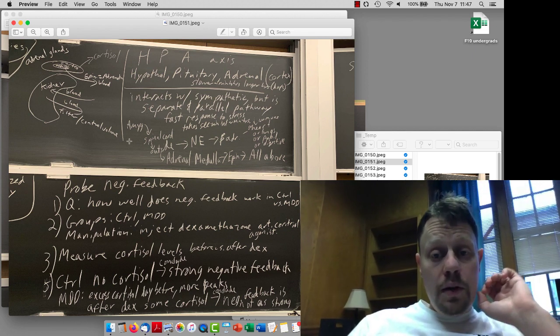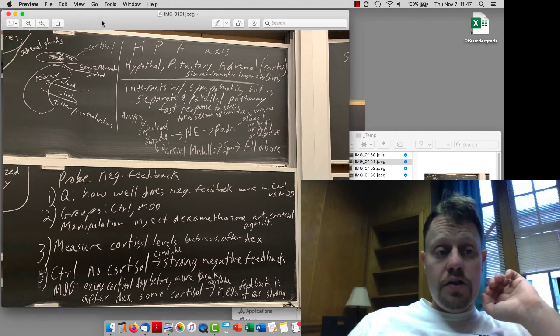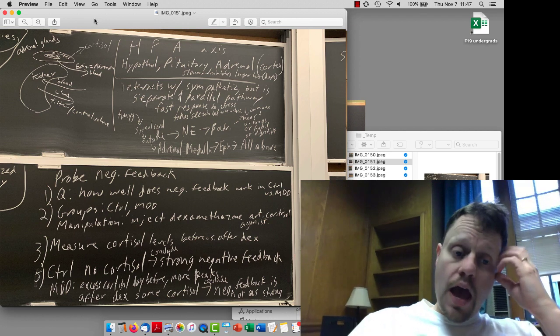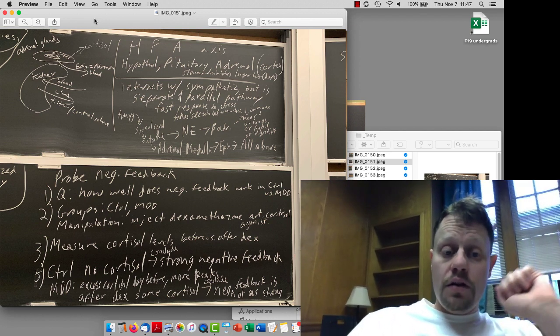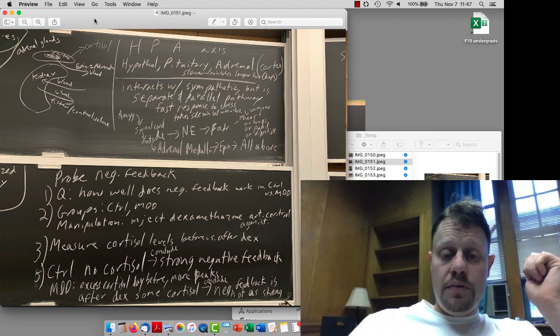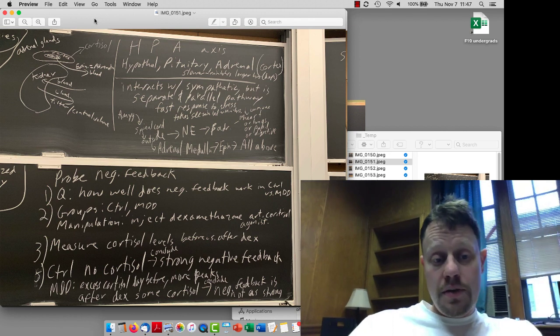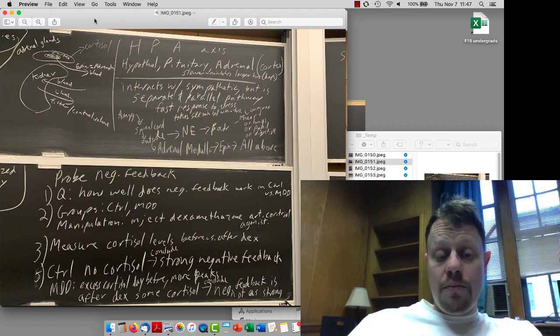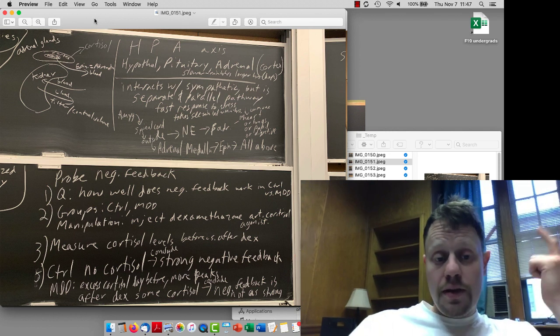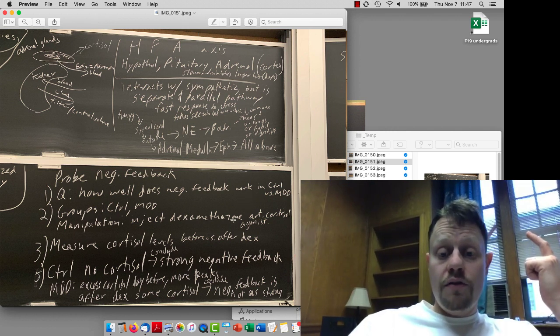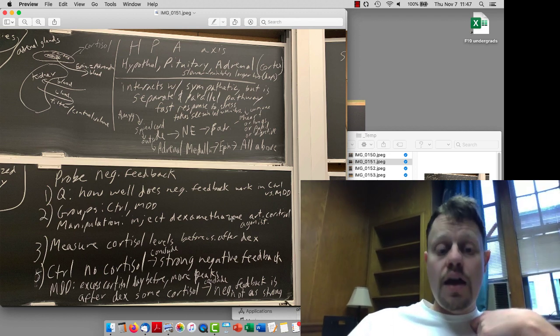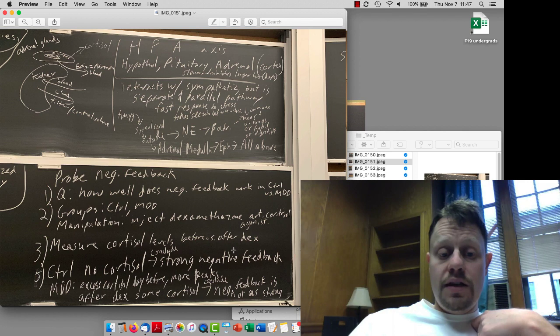But what we talked about in terms of a collection of research articles is how can we probe whether negative feedback is working? How well does negative feedback work in controls versus major depressive disorder patients? So, we have controls and major depressive disorder patients. We're going to measure their cortisol levels over the course of a day before doing anything and then inject dexamethasone, which is an artificial cortisol mimic, an agonist that activates cortisol receptors, and then measure cortisol levels the next day.